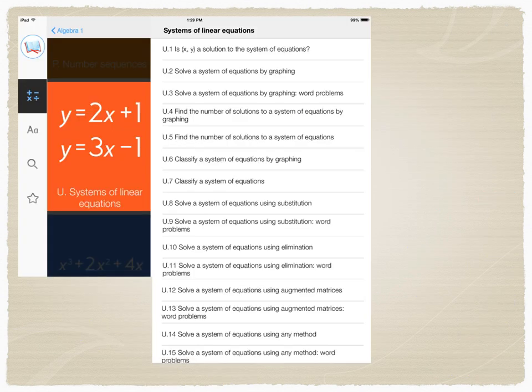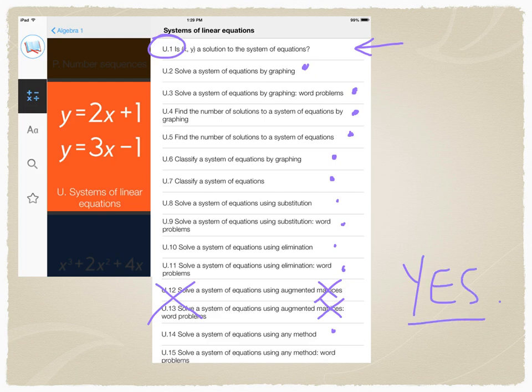So for systems of equations, you're going to be looking at topic U. And you can definitely try solving by graphing. You can solve by graphing with a word problem. Finding the number of solutions is an excellent set of questions to work on. Classify a system. These are all excellent. All the way down until we get to this stuff about matrices. You are not going to have to worry about the ones that involve matrices. We do not learn that. So skip those two. Am I saying do every single one of these all the way down? Do you want to be the most successful you can? Then yes. You should be going in and practicing a little bit of everything. And if you're not lately, that could be why you might be struggling. So take the time to do it. See you guys in class.